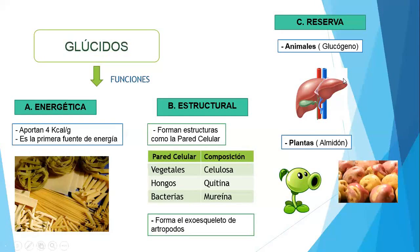Cuando hacen ejercicio y de un momento a otro sienten un hincón a la altura del hígado, es una señal de que el organismo está haciendo gluconeogénesis para transformar el glucógeno en glucosa y obtener energía. La primera fuente de energía son los glúcidos, y los absorbemos a través de la glucosa. Las plantas, cuando producen demasiados glúcidos, también los reservan en forma de tubérculos como la papa, en raíces como la yuca, en frutos y semillas. Su estructura de reserva se llama almidón. Cuando comemos papa, nos estamos comiendo almidón.